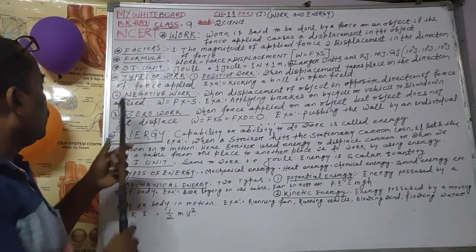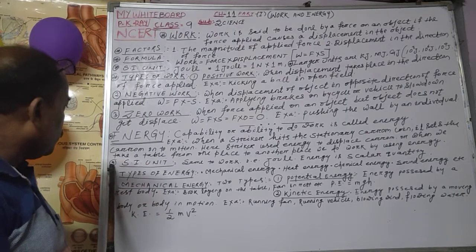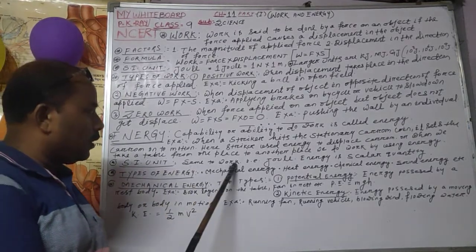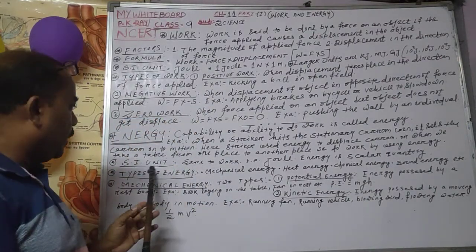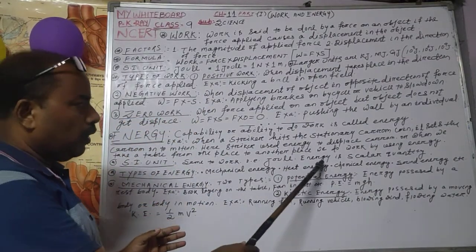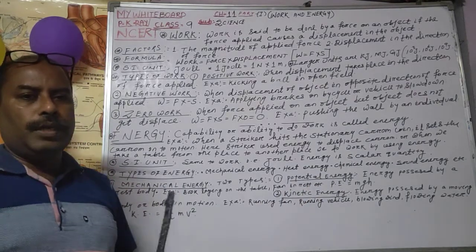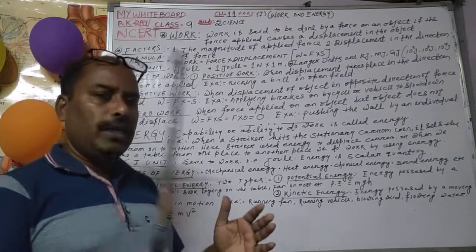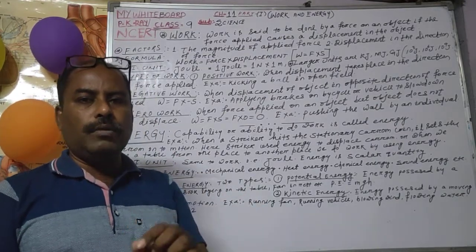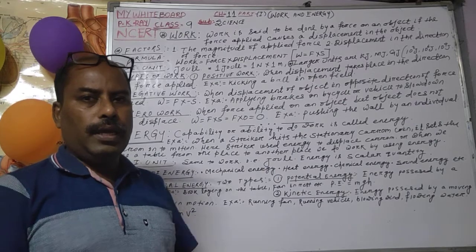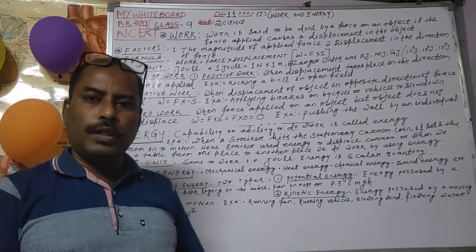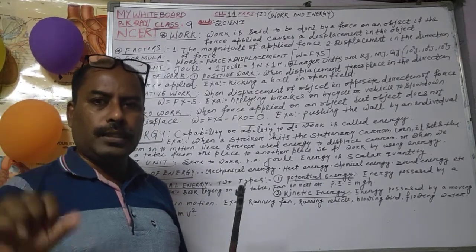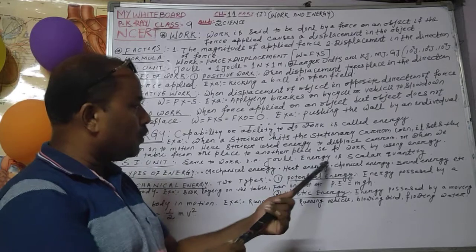Similarly, as we found the SI unit of work, we go for the SI unit of energy also — same as work. SI unit of work is Joule and energy is also Joule. Energy is a scalar quantity because there is no direction applied in energy. Any physical quantity with only magnitude and no direction is called a scalar quantity. Both magnitude and direction is known as a vector quantity. Energy does not have any direction related to it, that's why it is called a scalar quantity.